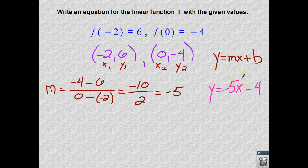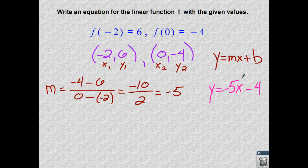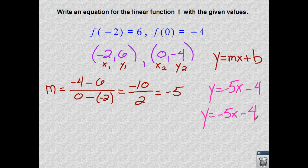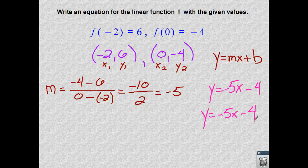So we have the equation y is equal to negative 5x minus 4. And there is your slope-intercept form using the given information.